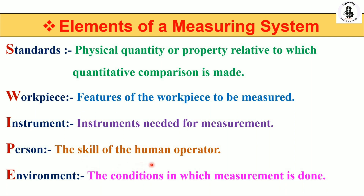The conditions in which the measurement is to be done must be controlled. So these five words — Standards, Work Piece, Instruments, Person, and Environment — make the acronym SWIPE: S-W-I-P-E. These five are the basic and important elements for the measuring systems, or in terms of metrology.